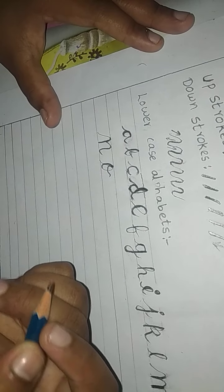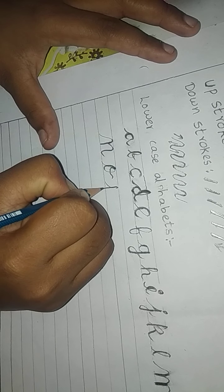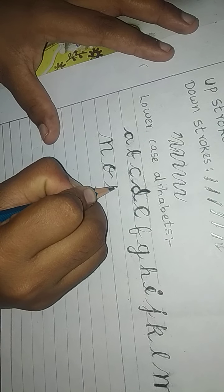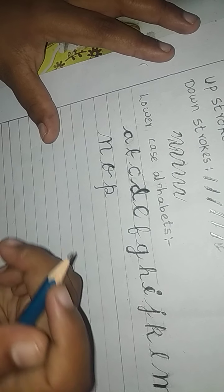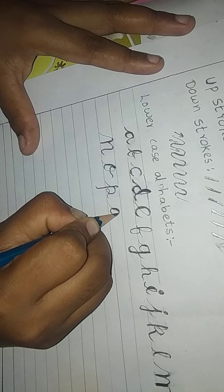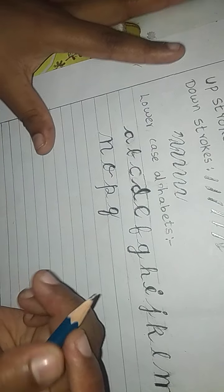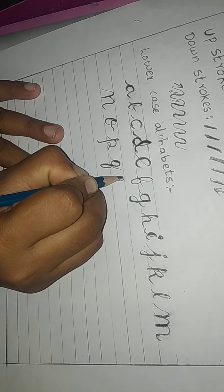Then write O like this. Then P: first thin line like this, then thick line like this. This is P. Then Q: first up stroke, then a thick line like this. This is Q. Then R: first a thin line like this, then draw a thick line like this. This is R.